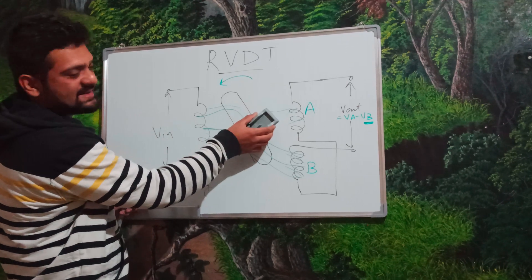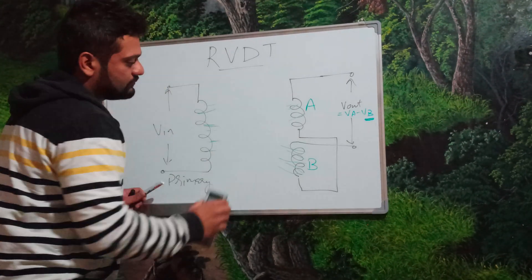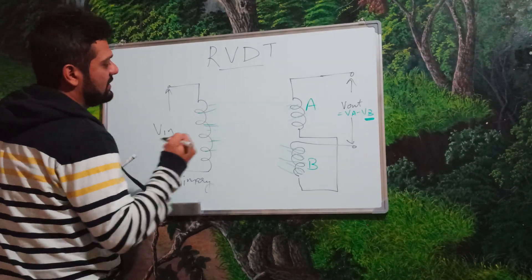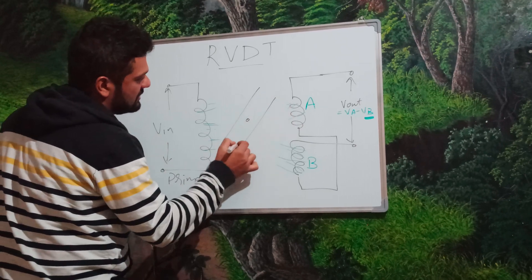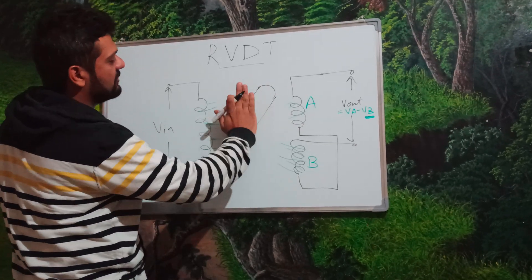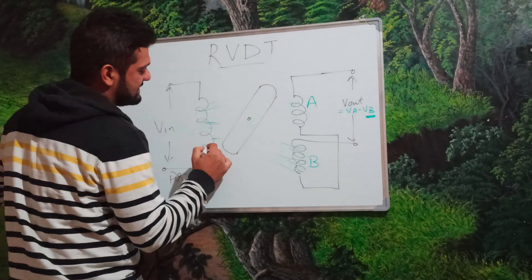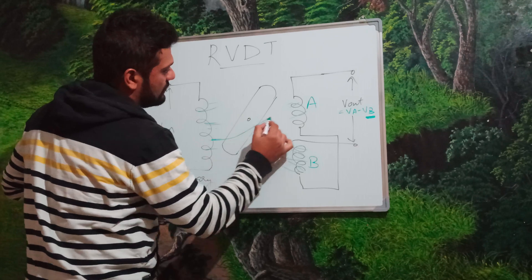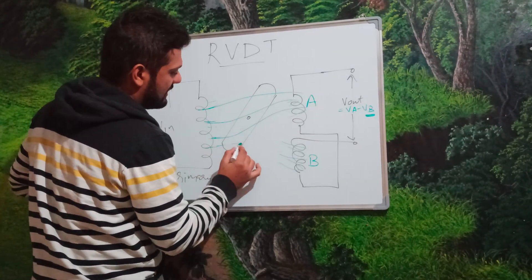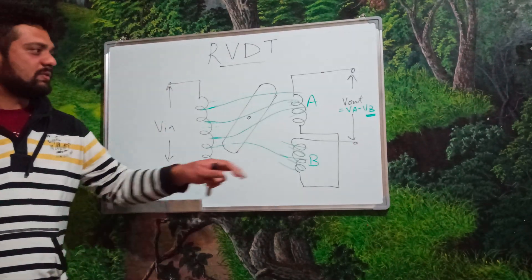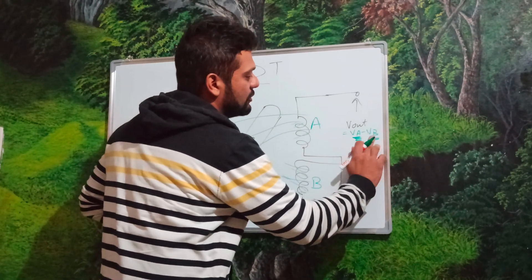Now, if we go about moving this in a clockwise direction, let me redraw this. Now the same cam, we are shifting in a clockwise direction. We have moved it from earlier neutral to clockwise position. In this case, more of the flux lines will connect with our coil A and very less amount of flux lines will connect with B, giving more output voltage on coil A compared to B.